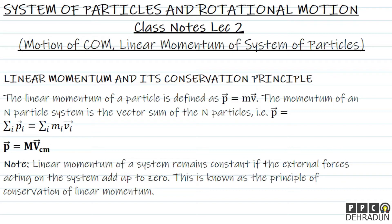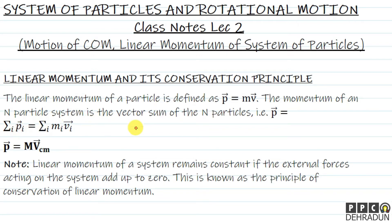First of all, we talk about the linear momentum of a particle, defined as p = mv (vector). Now, if we have a system of n particles, we need the vector sum of every particle individually. The momentum of an n-particle system is the vector sum of all n particles: p vector = summation of p_i vector, which expands as p1 + p2 + p3 and so on. And p = m_i * v_i vector.